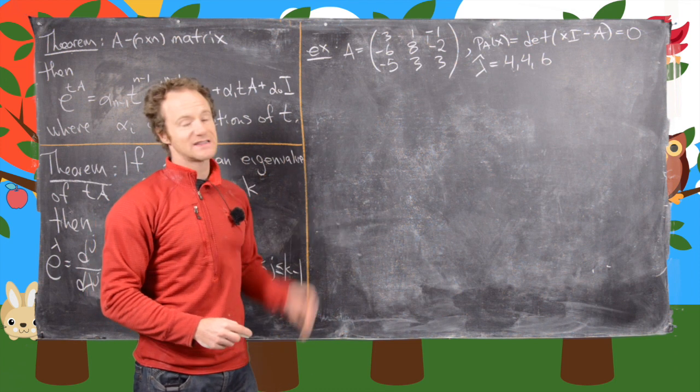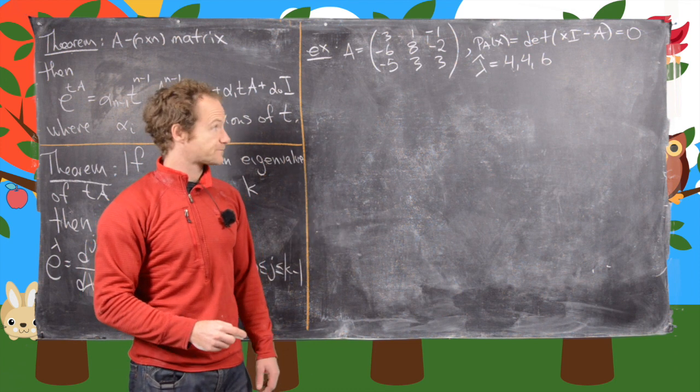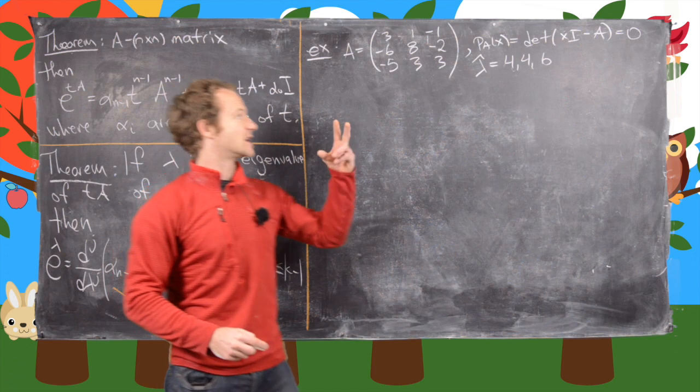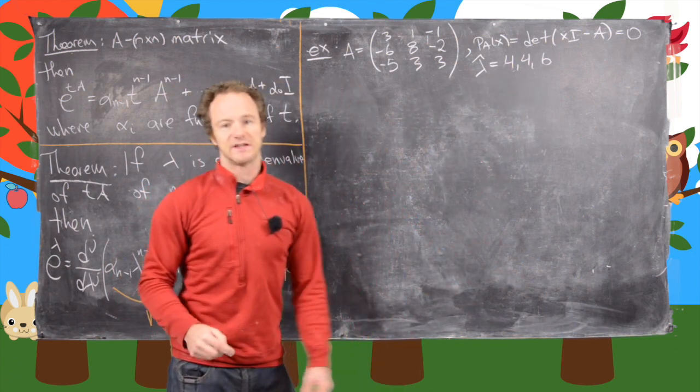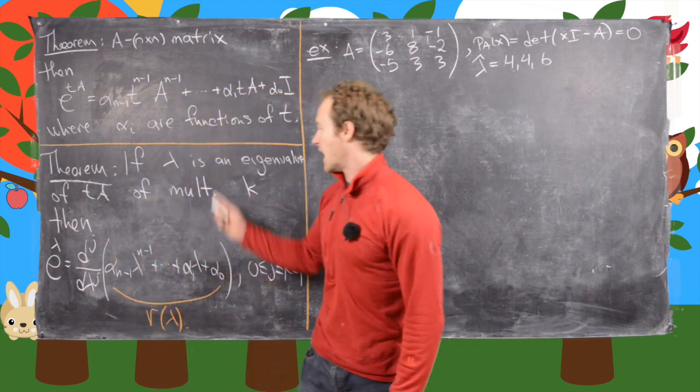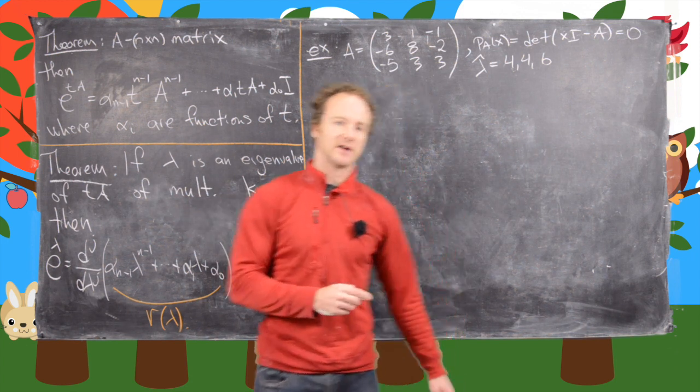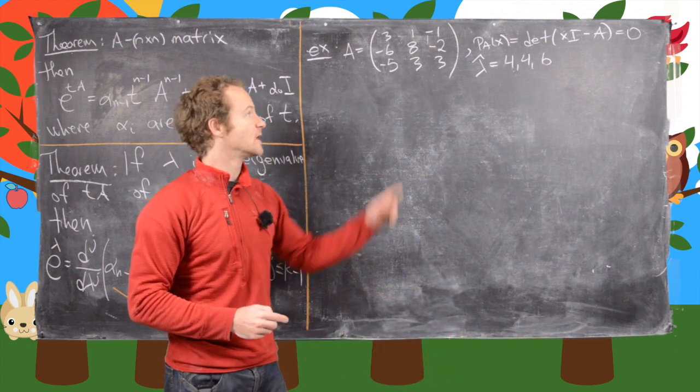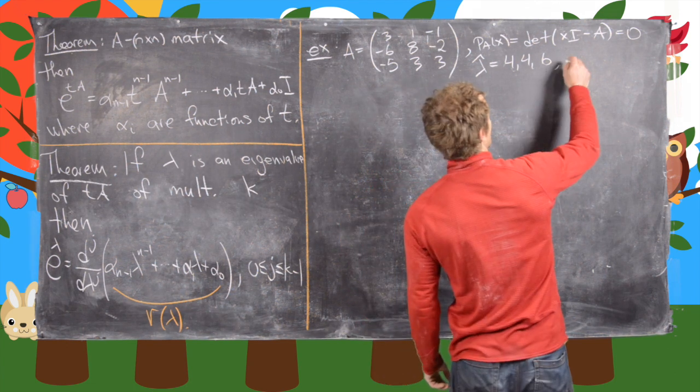I'll just give you the information: this is non-diagonalizable. So that means this thing has algebraic multiplicity two but only geometric multiplicity one. And this multiplicity over here is talking about just the algebraic multiplicity.